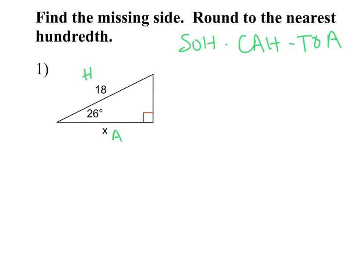By labeling only the two sides that I either know or am looking for, I've helped myself decide which trig function to use. I'm going to use cosine. Why? Because the two sides I have labeled are adjacent (A) and hypotenuse (H), and those match cosine. Sine uses O and H, and tangent uses O and A, so the combination you have will always match up with one of those three.